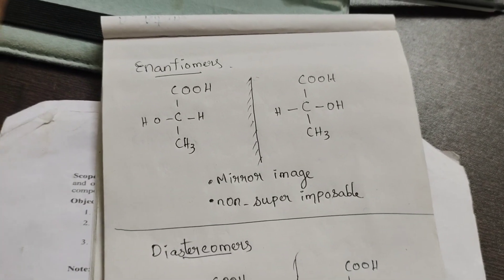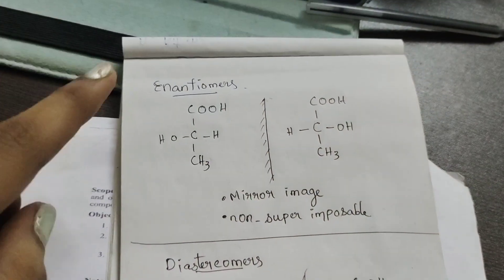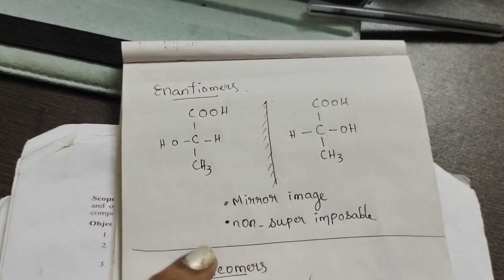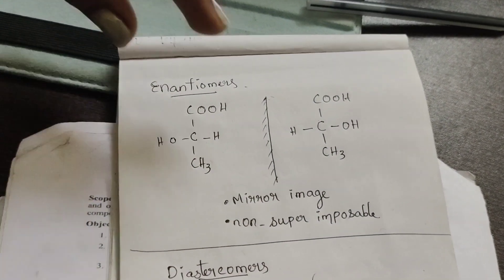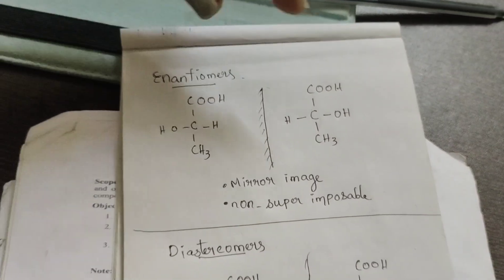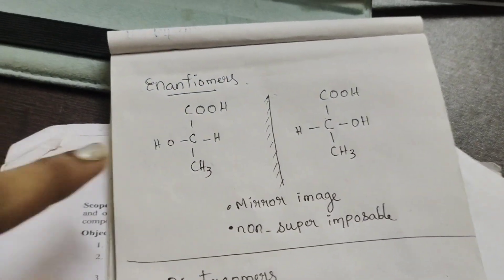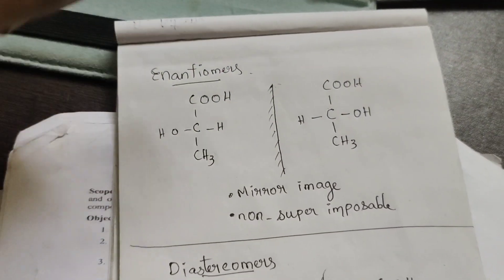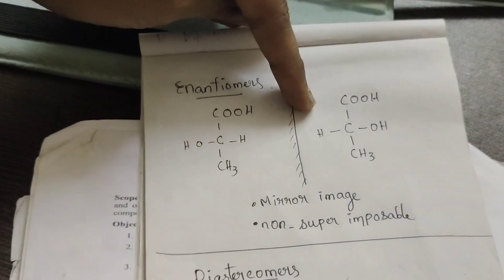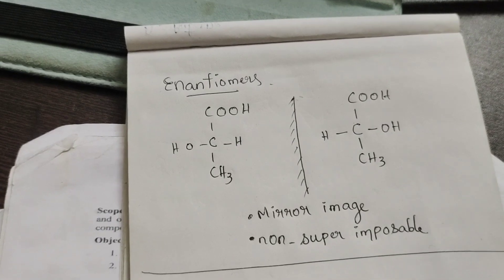Because mirror image — this image is like this, that is a mirror image. Mirror image and non-superimposable. This structure is like this; you can superimpose one onto the other using H and H. This is a non-superimposable image.